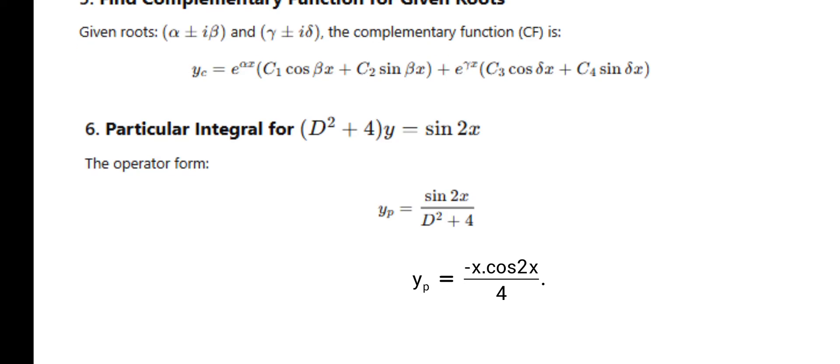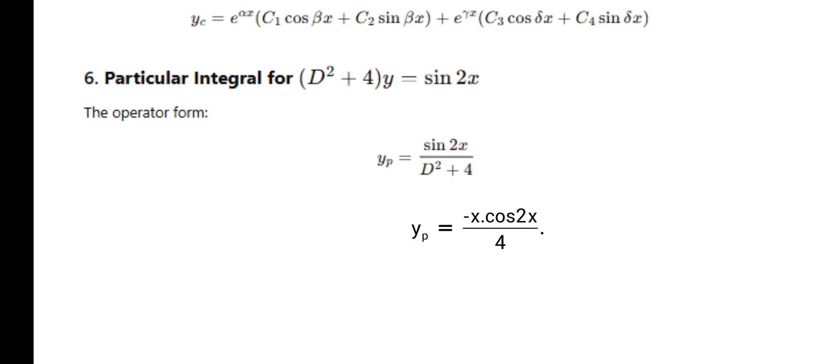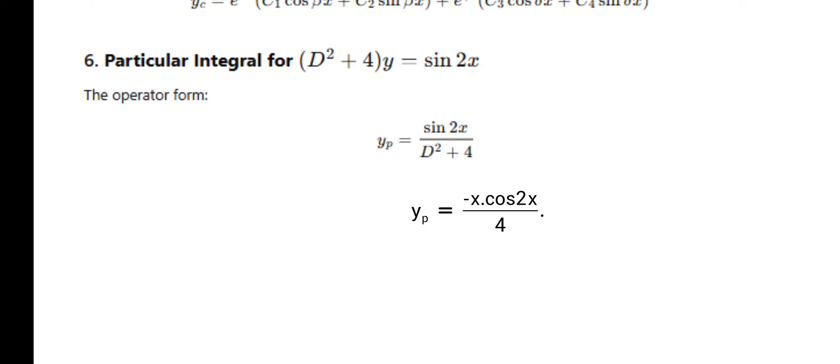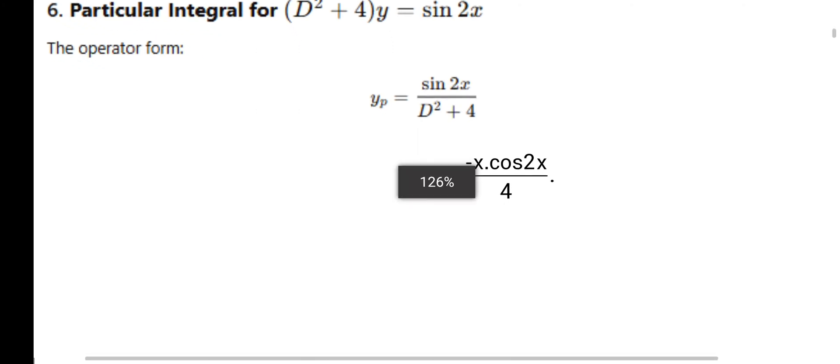Next: find the particular integral for (D² + 4)y = sin 2x. This is a Type 2 problem from Unit 3, linear differential equations. For sin(ax) or cos(ax), substitute D² = -a². Here a = 2, so substituting: -4 + 4 = 0. When denominator becomes zero, put x in the numerator and differentiate the denominator once. So PI = x·sin 2x / (2D). Since 1/D means integration, we integrate sin 2x to get -cos 2x / 2. Therefore PI = -x·cos 2x / 4.